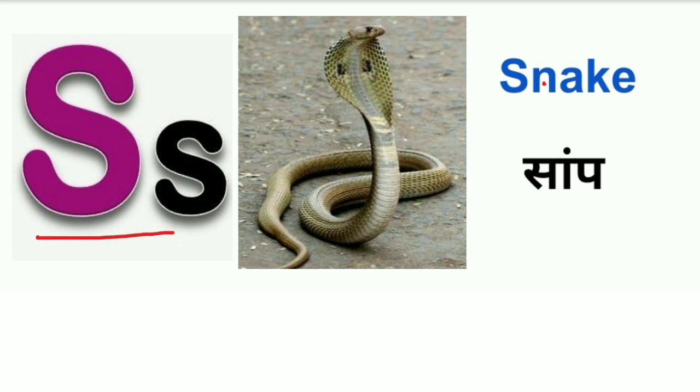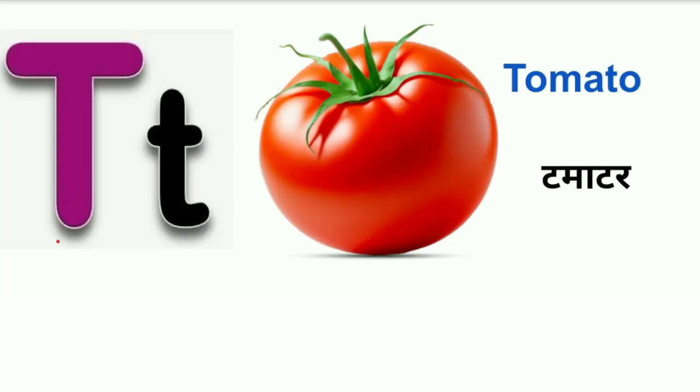S for snake. Snake means saanp. T for tomato. Tomato means tamatar.